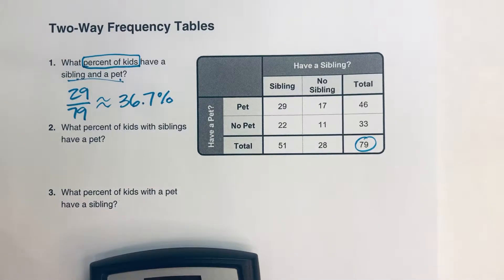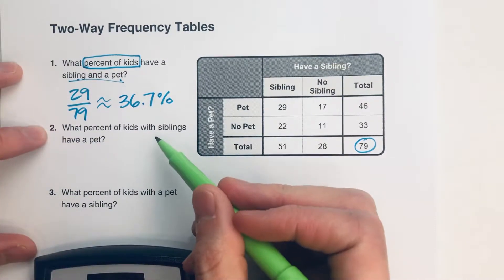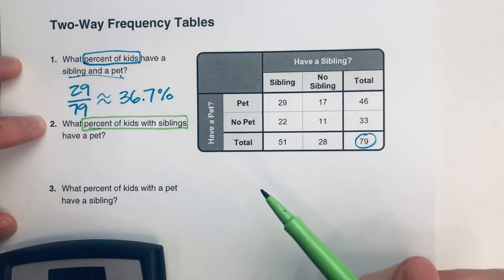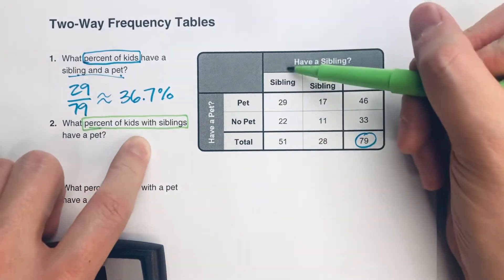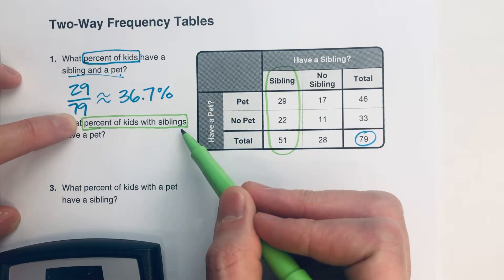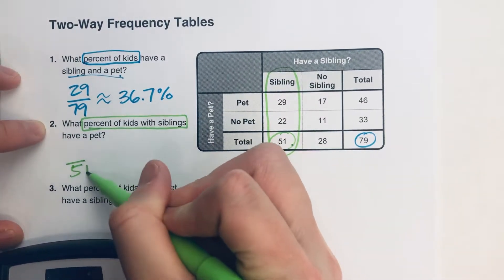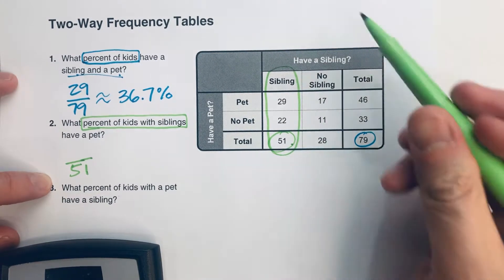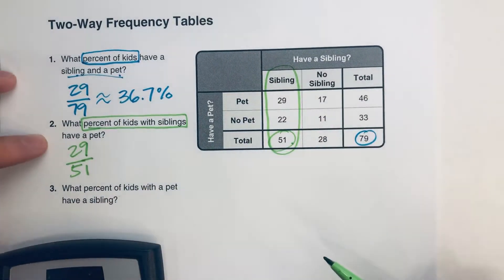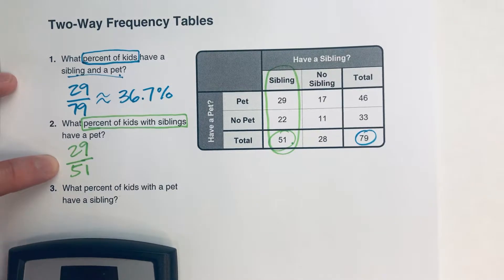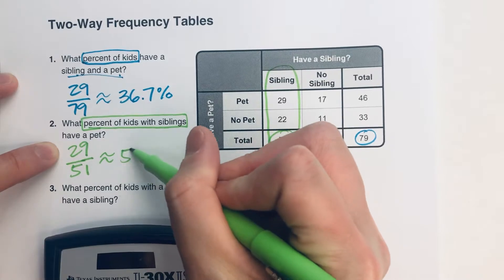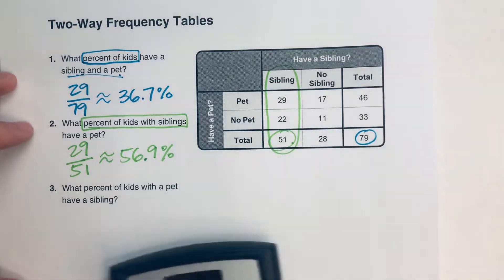Question two: what percent of kids with siblings have a pet? In this case, we want to know what percent of kids with siblings, so that's our whole. We're looking at the sibling column, and there are 51 kids with siblings. Out of those 51 kids, 29 of them have a pet. So 29 out of 51 gives us about 56.9%.